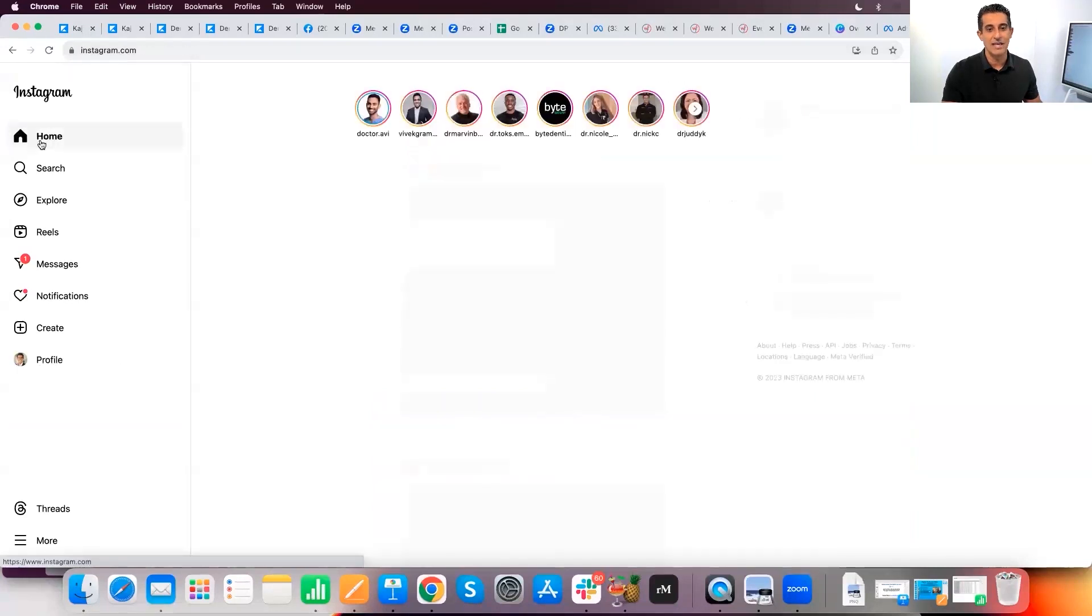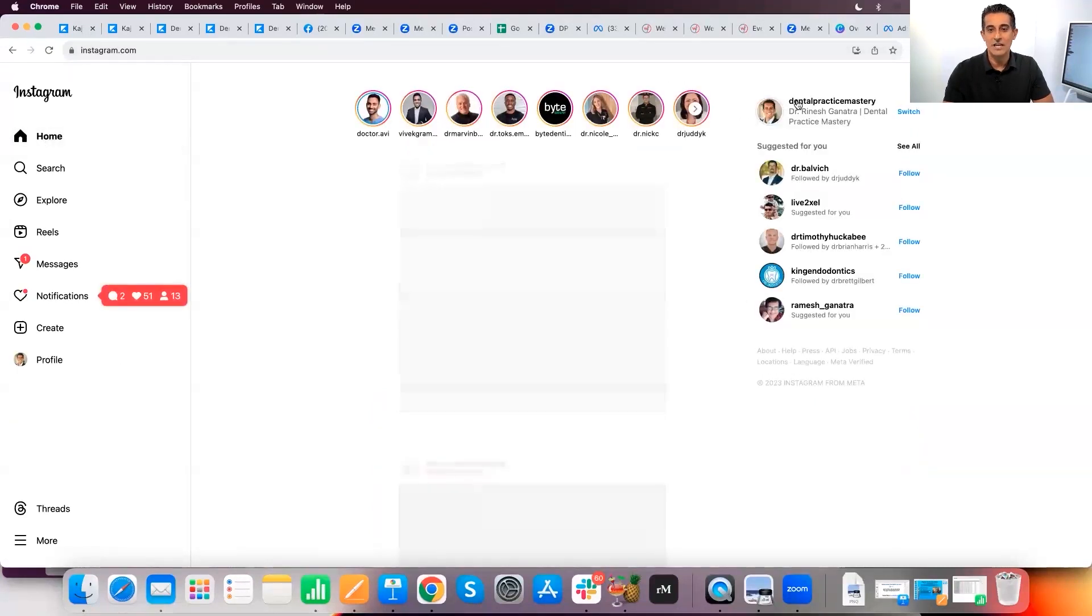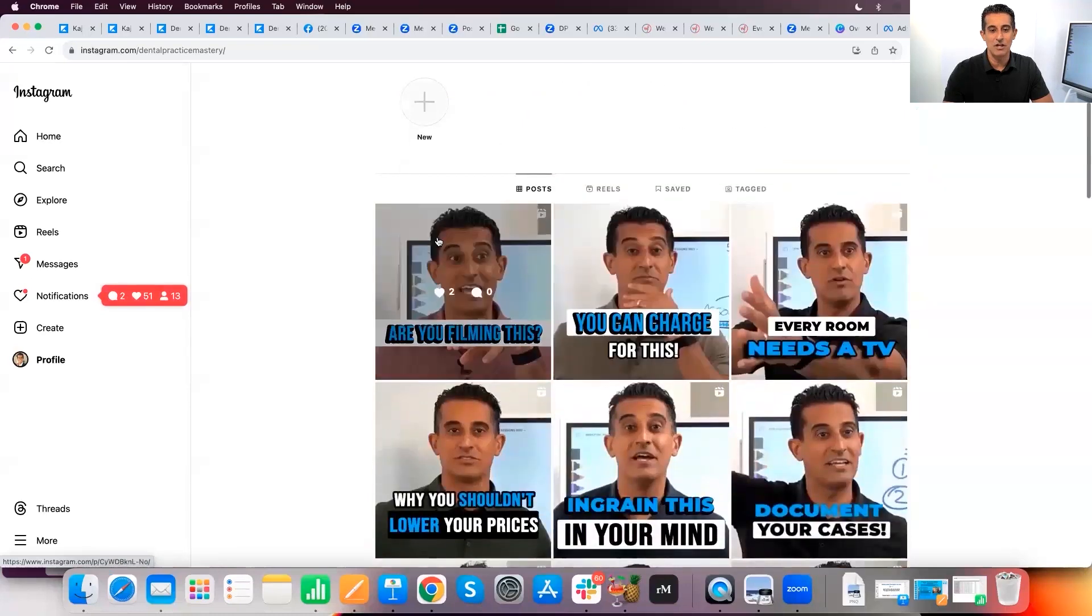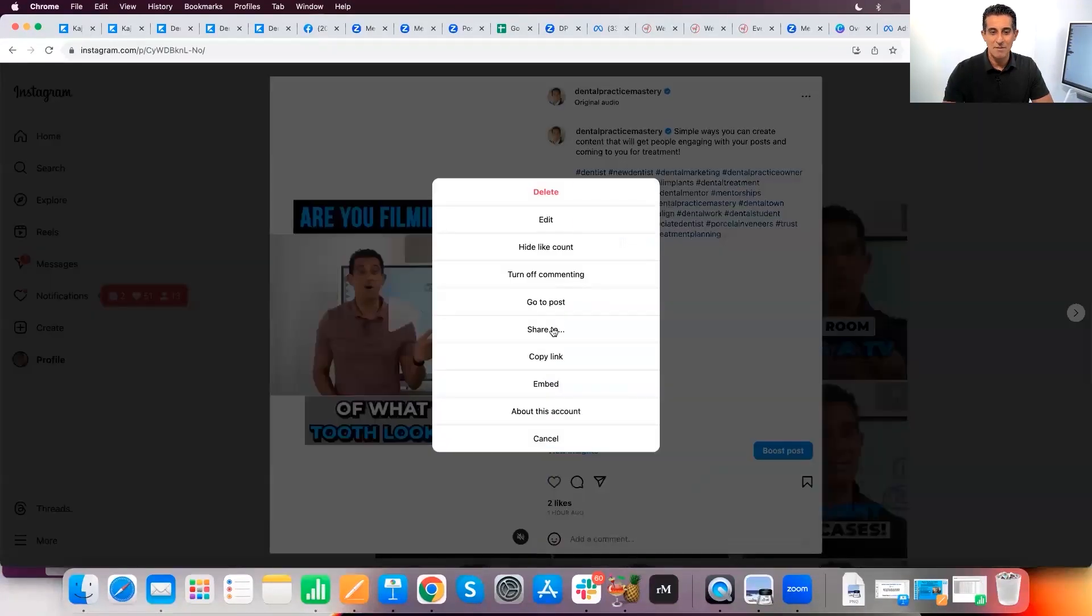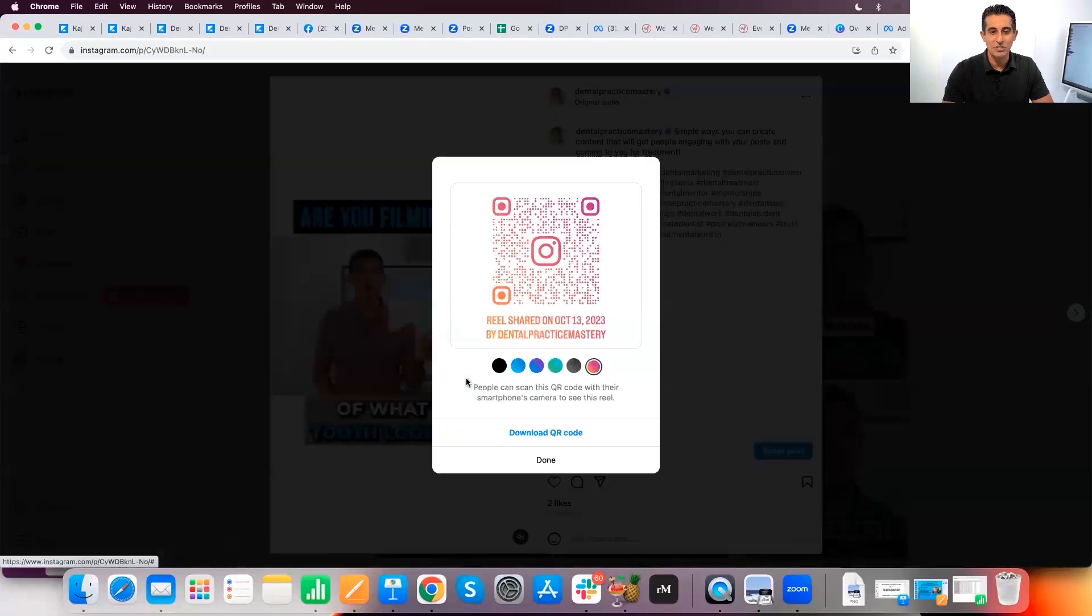Because now you're like, oh, I got this QR code on any of my videos. If it's a hygiene room, I'm going to put the QR code. Here's a hygiene video. I'm going to take that. I'm going to hit share and I'm going to grab the QR code and I'm going to put that QR code right in my hygiene room.